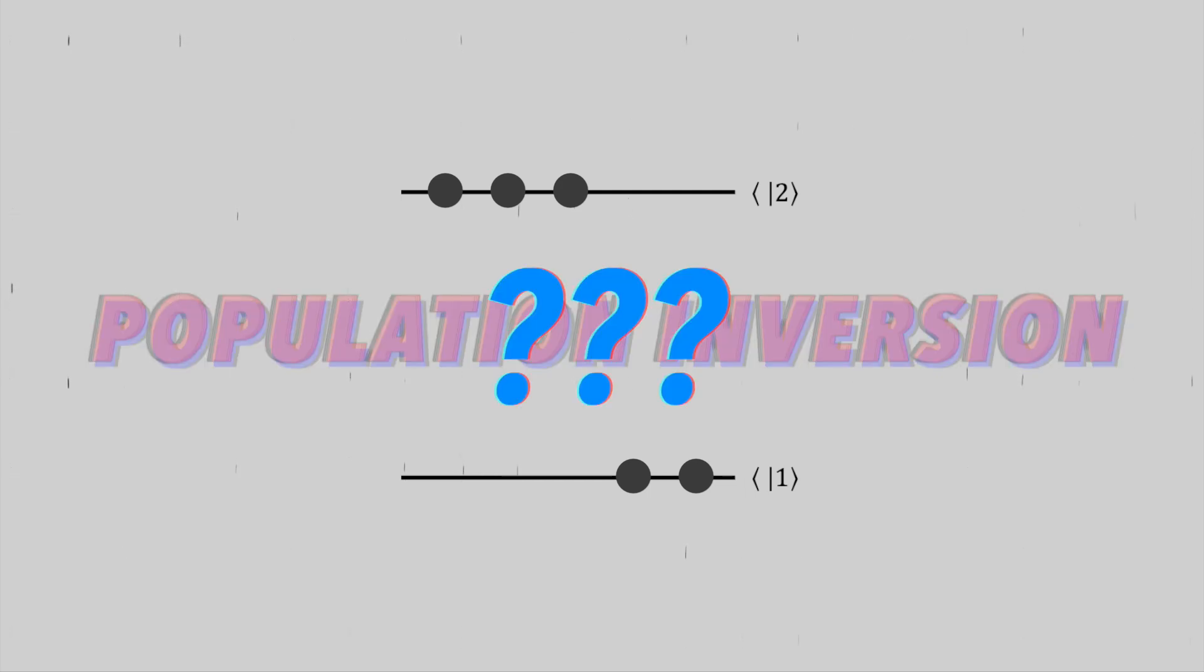So how do we achieve a population inversion with a two-level system? Spoiler alert, the answer is it's impossible. So let me explain.